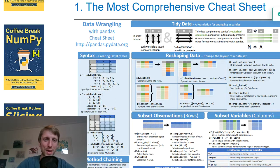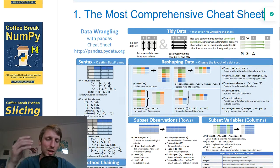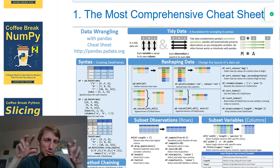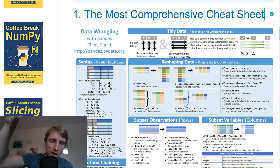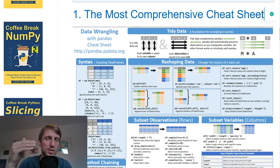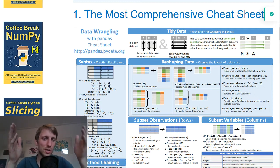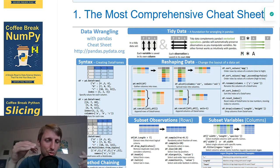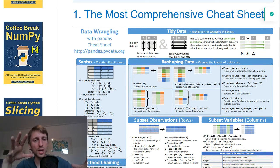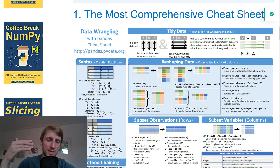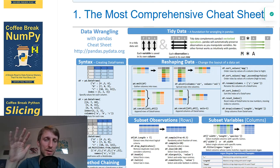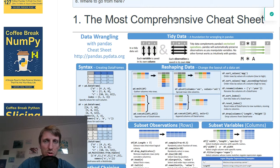Hey, welcome to this video where I want to show you the best pandas Python cheat sheets in existence. What is pandas? You can think of it as the Excel of Python coders — it allows you to create and analyze spreadsheets in your code. It has some very advanced techniques to access certain rows and columns. For example, if you want to track your expenses with an expense column and an income column, you can model this in a pandas DataFrame very nicely. Pandas allows you to do all kinds of advanced calculations on tabular data.